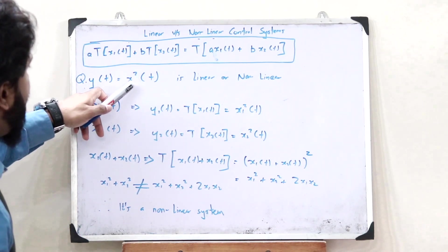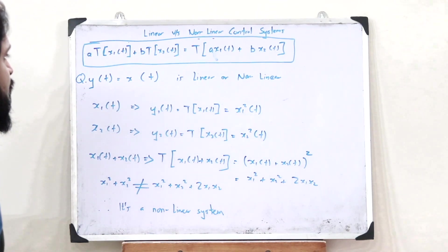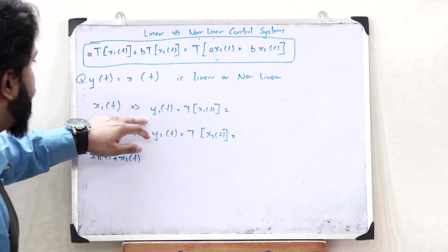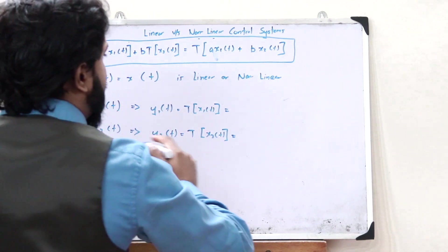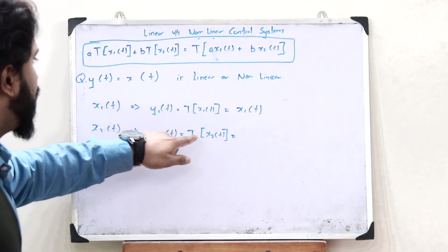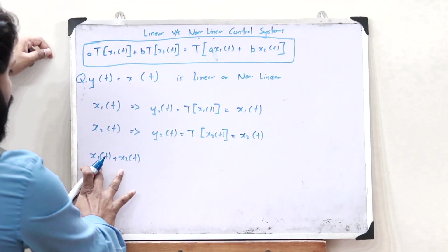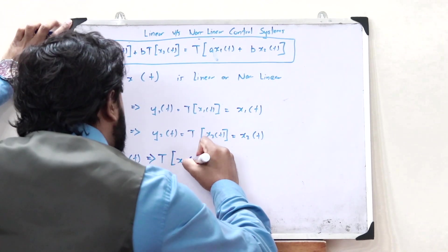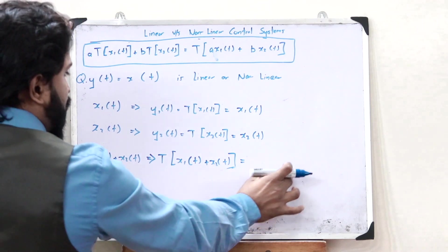Now let us see the case where y(t) = x(t). When we give an input x1(t), we get the output y1(t), which is the transform of x1(t), equal to x1(t) itself. Similarly, for x2(t), the output y2(t) equals the transform of x2(t), which is x2(t) itself. For the combination x1(t) + x2(t), we get the transform of (x1(t) + x2(t)), which equals x1(t) + x2(t) itself.